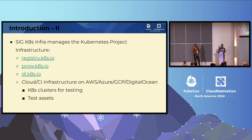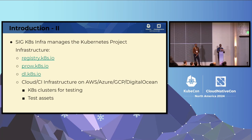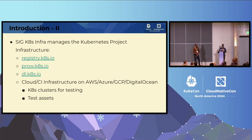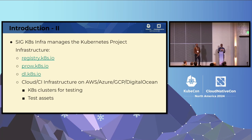For those of you who don't know, SIG Kubernetes infrastructure manages the Kubernetes project's cloud infrastructure. We run the project's image registry called registry.k8s.io, which should be very familiar to everybody here. We also have the Prow CI — that's the primary CI we use at Kubernetes, a custom-built CI. We have dl.k8s.io that serves binary assets of all Kubernetes binaries, and some miscellaneous cloud infrastructure running on AWS, Azure, GCP, and DigitalOcean — primarily Kubernetes clusters used for end-to-end testing.